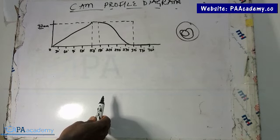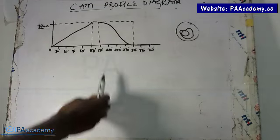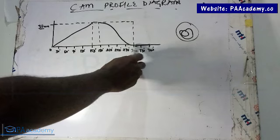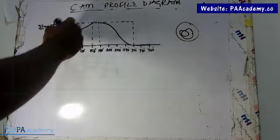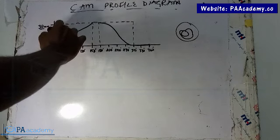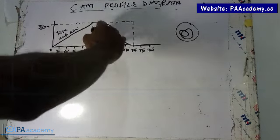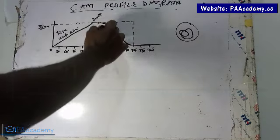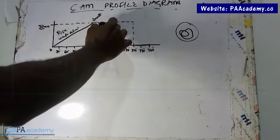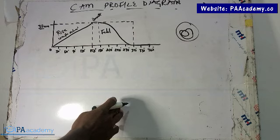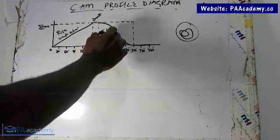For another 120 degrees of camshaft rotation, the follower experiences a 30mm fall with simple harmonic motion. So from that point to this point here, it falls with simple harmonic motion. Then from 300 to 360 degrees it dwells again. So we have: rise with uniform velocity, dwell, fall with simple harmonic motion, and dwell.